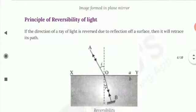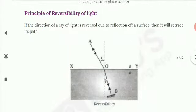Now, the principle of reversibility of light. If the direction of a ray of light is reversed due to reflection off a surface, then it will retrace its path.